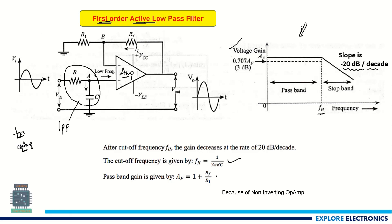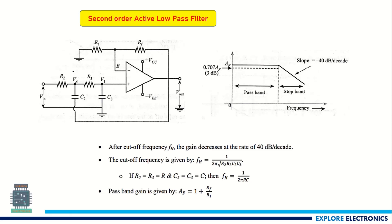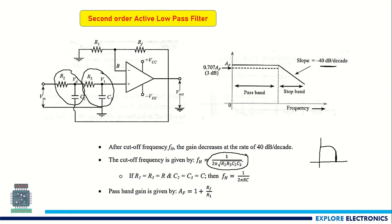In the second-order active low-pass filter, two RC stages are present — connected back-to-back making two low-pass filters. The difference is in the slope, which is now minus 40 dB per decade. As we go to higher-order filters, the slope increases further, giving a sharper response. The cutoff frequency of the second-order low-pass filter depends on R2, R3, C2, and C3. If all resistor and capacitor values are equal, it reduces to 1 divided by 2πRC.